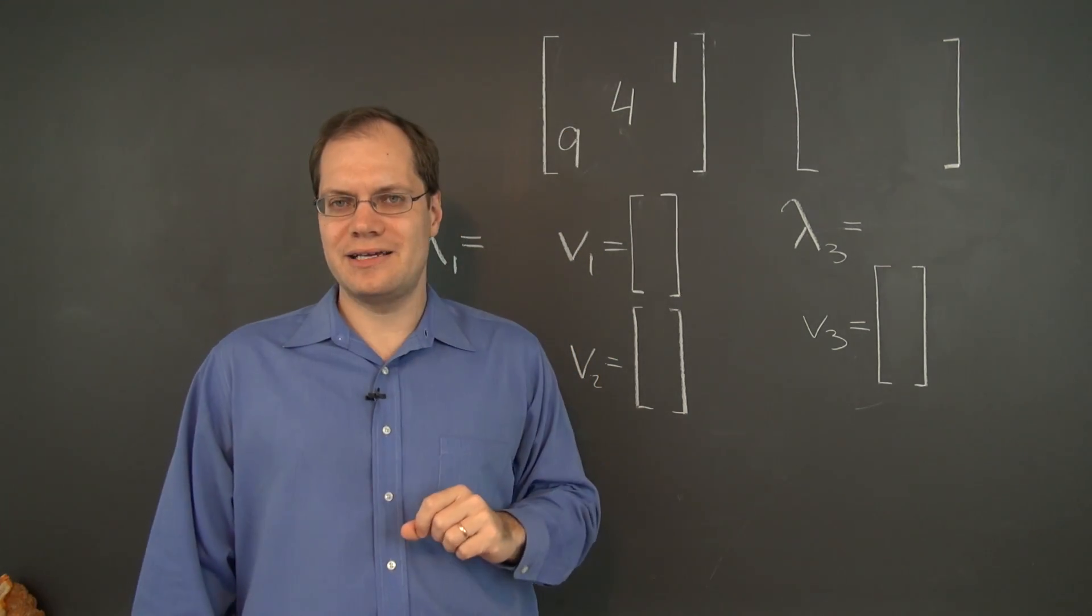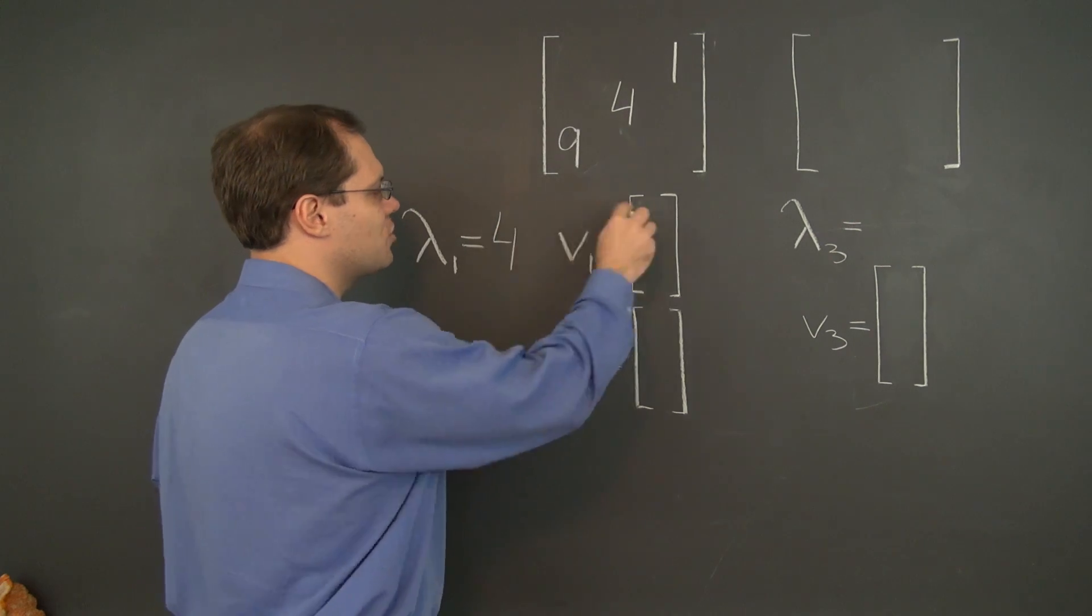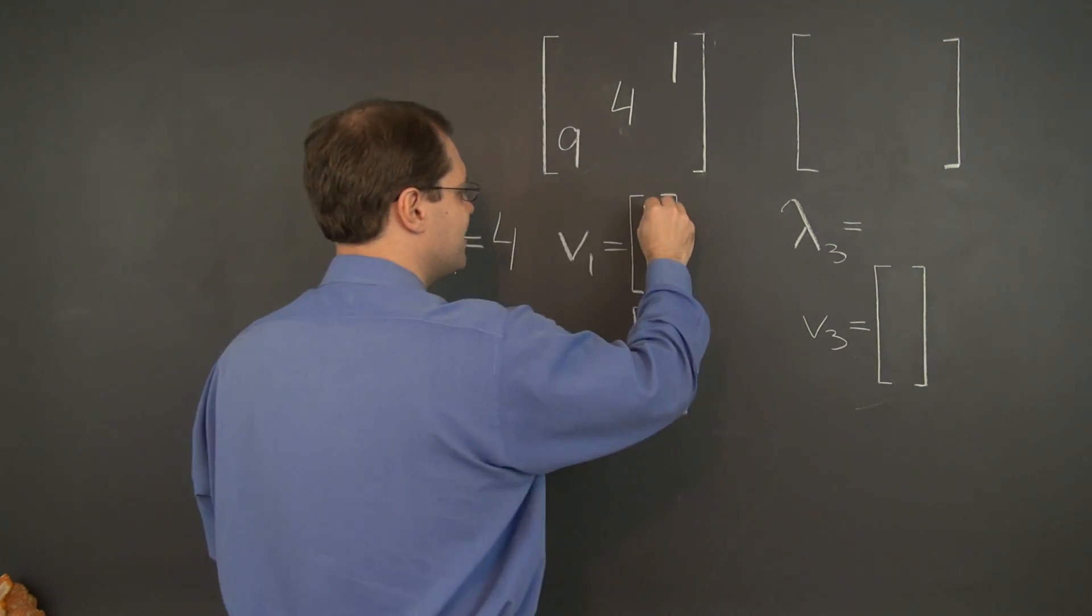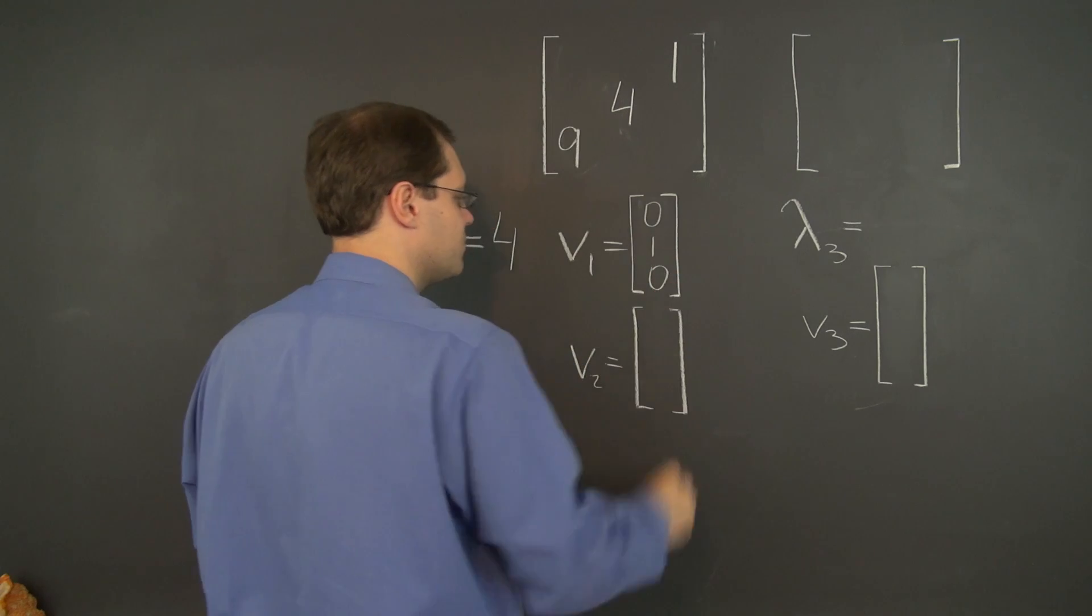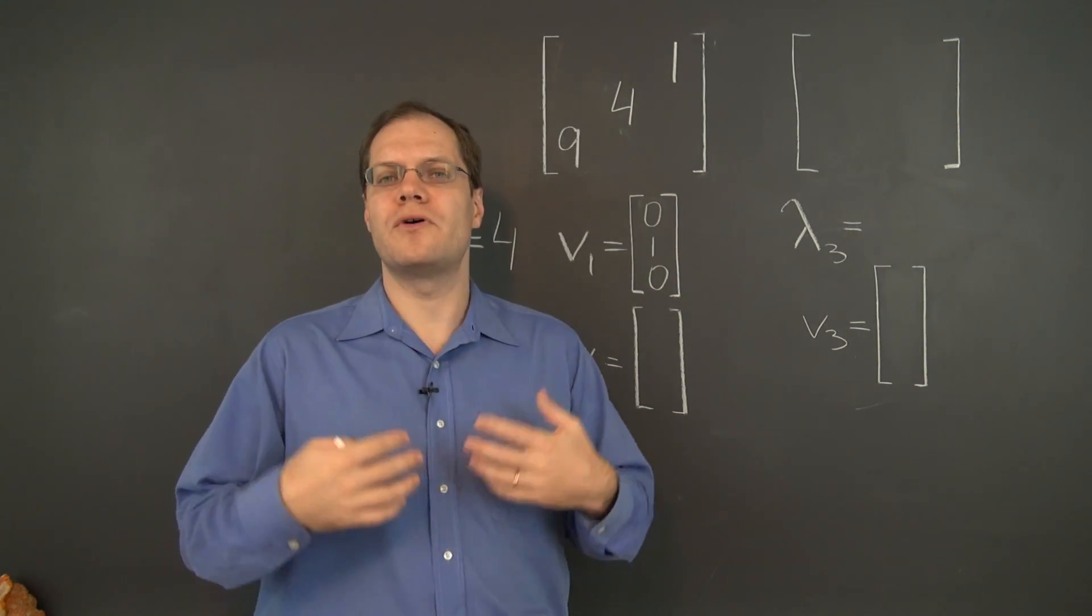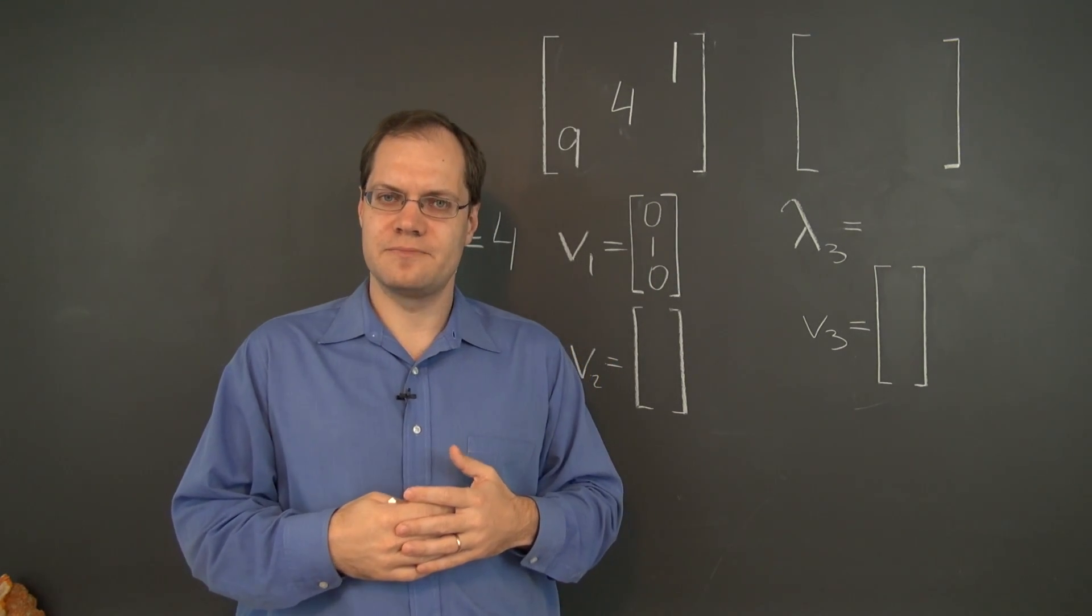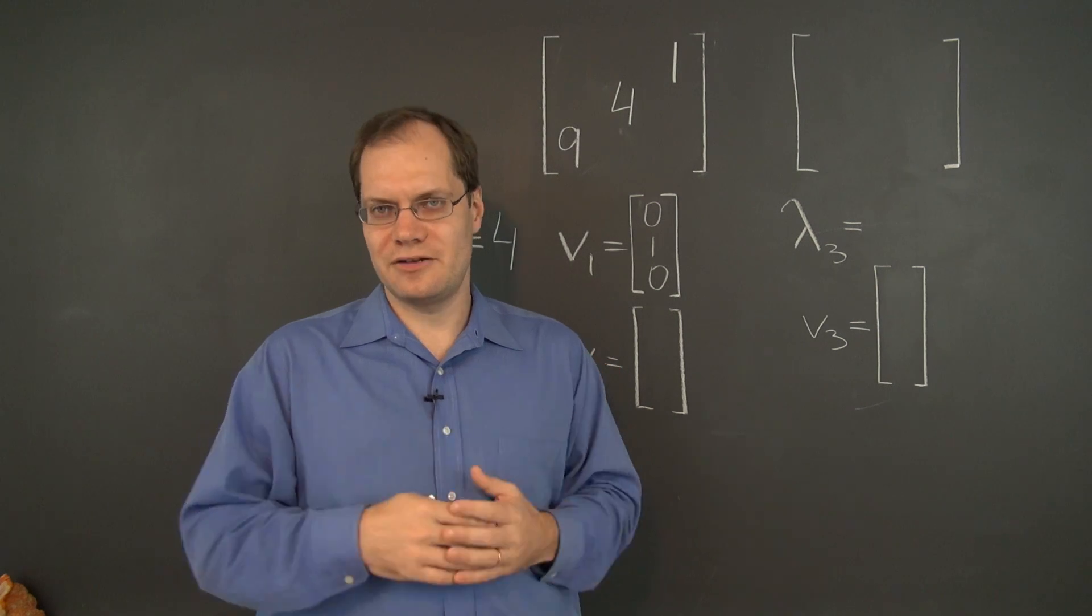Well, four is one of the eigenvalues, let's write it down. And the corresponding eigenvector is zero, one, zero. So that's the one we know from one of the other features we discussed. Now let's determine the other two.